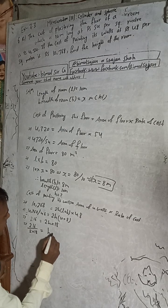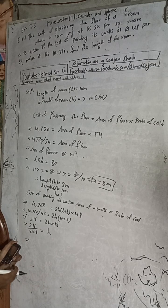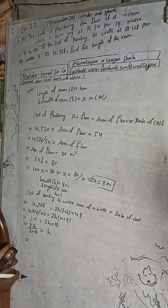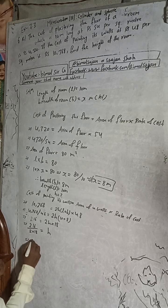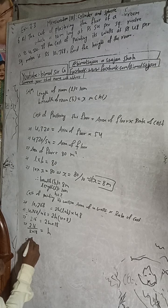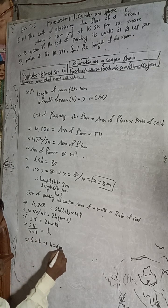This implies 216 divided by 18 into 2. 216 divide by 36 is 6 meter. We got here 6 is equal to H. This implies H is equal to 6 meter.